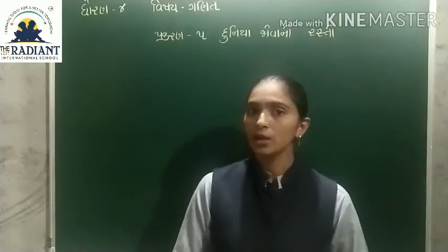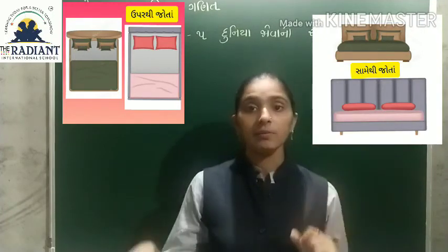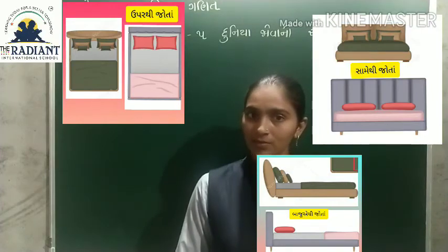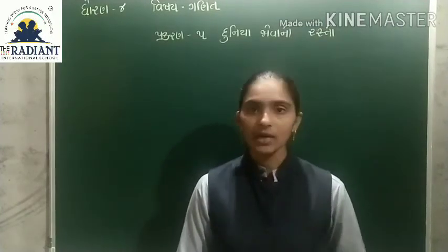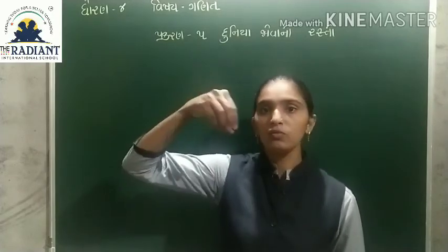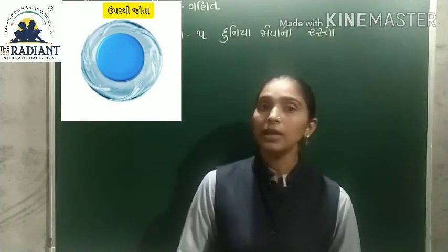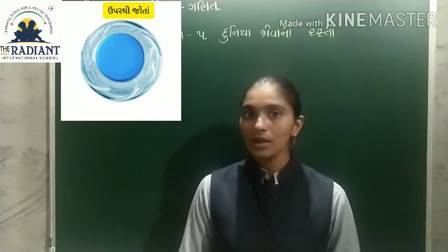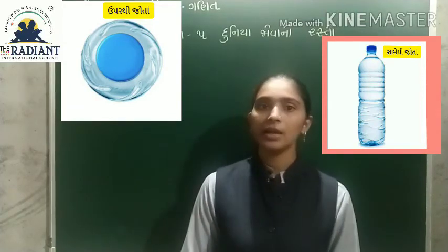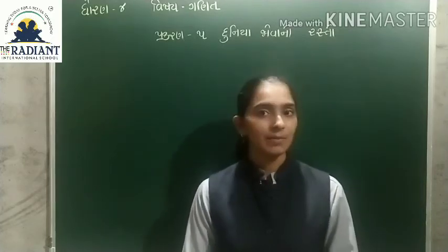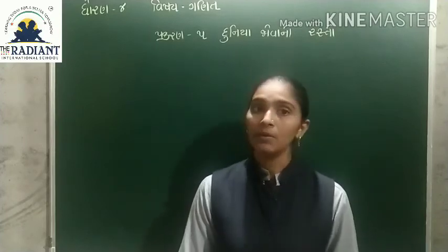ઉપરથી જોઈએ છે, પલંગ ઉપરથી કેવો દેખાય? આ રીતે દેખાય. સામેથી જોઈએ, આ રીતે, બાજુથી જોઈએ, આ રીતે. અને પાણીની બોટલ ગોળ-નળાકાર આકારની છે, એટલે સામેથી કે બાજુથી જોઈએ, આ રીતે દેખાય.